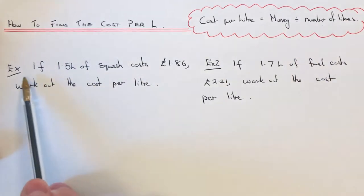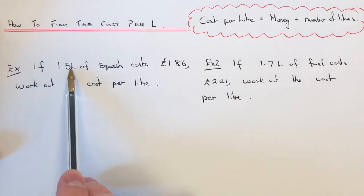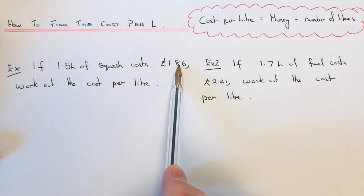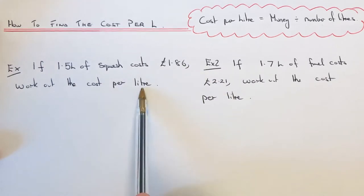Let's have a look at the example that we have here. If 1.5 litres of squash costs £1.86, work out the cost per litre.